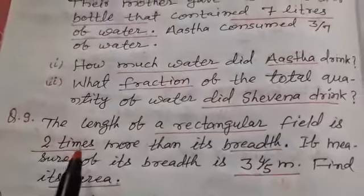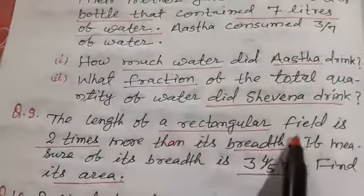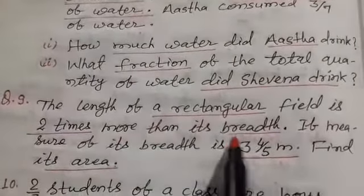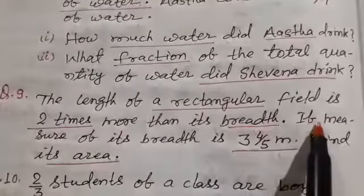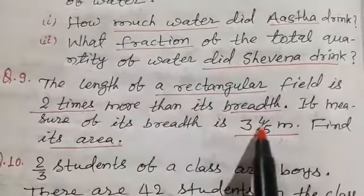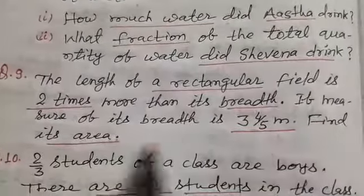Question number 9 is the length of a rectangular field is 2 times more than its breadth. If measure of its breadth is 3 and 4 by 5 meter, find its area.